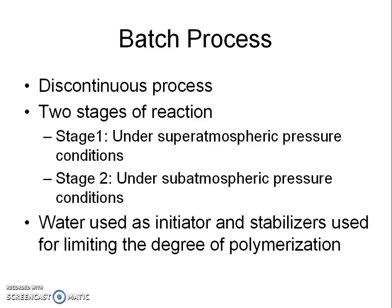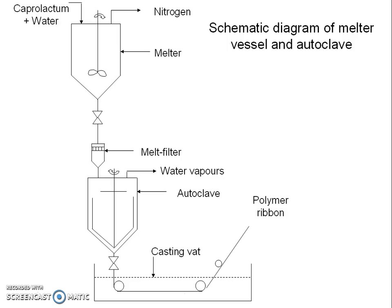The batch process is a discontinuous process with two stages of reaction. In stage 1, the reaction is carried out under super-atmospheric pressure conditions, while stage 2 of polymerization is under sub-atmospheric pressure conditions. During stage 1, solid caprolactam and water are fed into the melter, which is the polymerization reactor. The jacket and coils for hot water circulation maintain the temperature of the melter, which is also provided with a stirrer. The vessel is heated up to a temperature of 90 to 100 degrees centigrade. A stabilizer is added on completion of melting. The excess pressure is released, and the whole charge is then fed into the preheated autoclave through the melt filters.